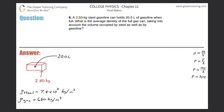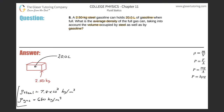Problem number eight: a 2.5 kilogram steel gasoline can holds 20 liters of gasoline when full. What is the average density of the full gas can, taking into account the volume occupied by steel as well as by the gasoline? So here's our container — the steel container weighs 2.5 kilograms without gasoline, and we can place 20 liters of gasoline into it.